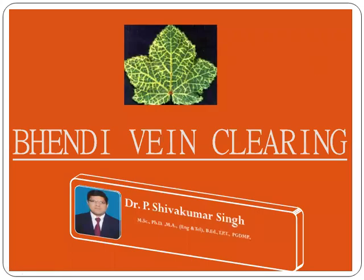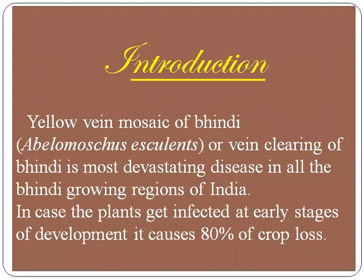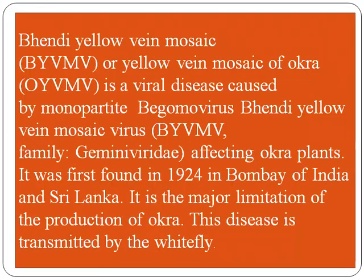Let us start with Bhindi Yellow Vein Mosaic disease. It is a viral disease of okra (Abelmoschus esculentus). Yellow Vein Mosaic of Bhindi is the most devastating disease in all the Bhindi-growing regions of India. When plants get infected at early stages of development, it causes up to 80 percent crop loss. BYVMV (Bhindi Yellow Vein Mosaic Virus) is caused by the Begomovirus, which belongs to the family Geminiviridae, affecting okra plants. It was first found in 1924 in Bombay, India and Sri Lanka.